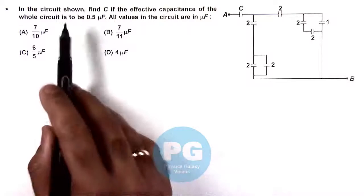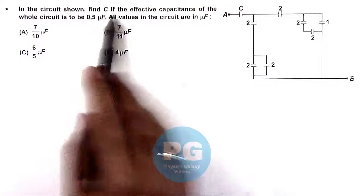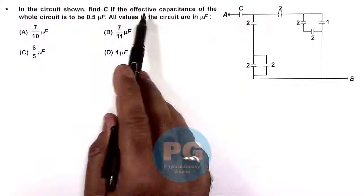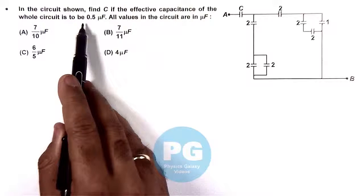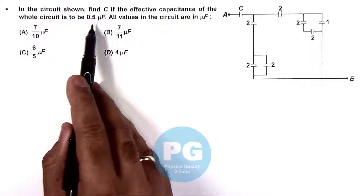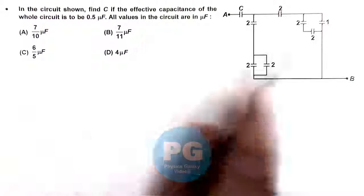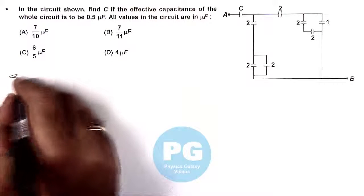In this question, we need to find C in the circuit shown. The effective capacitance of the whole circuit is to be 0.5 microfarad, and all values are given in microfarad.